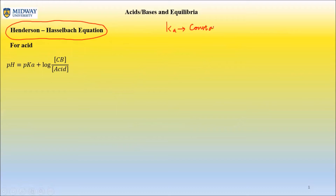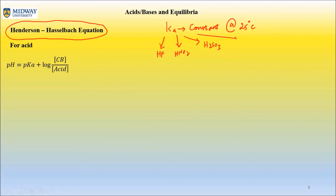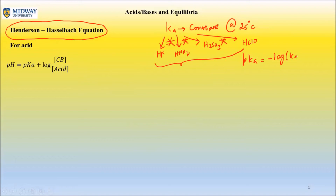Ka is a constant that is unique for each acid. Ka for HF is not the same as Ka for HNO2. At 25 degrees Celsius, Ka for HF, HNO2, H2SO3, and HClO are all weak acids but they all have their own distinct Ka values — they are not equal. To find pKa, it's simply the negative log of Ka. You will be provided Ka, so you don't need to memorize it.